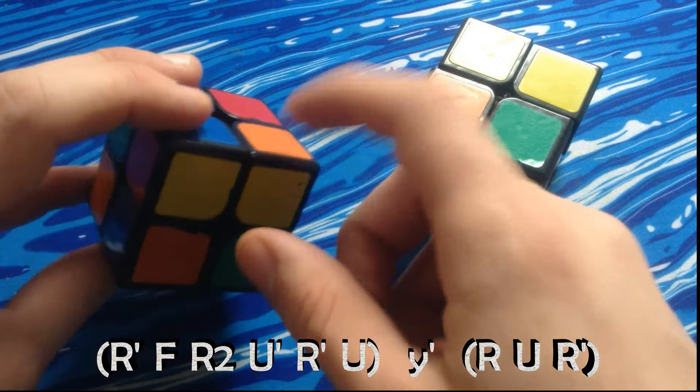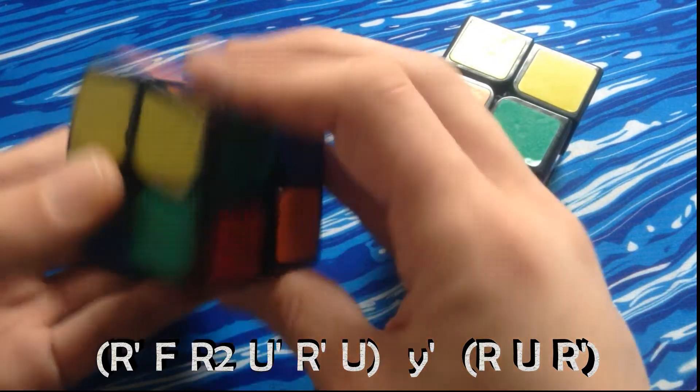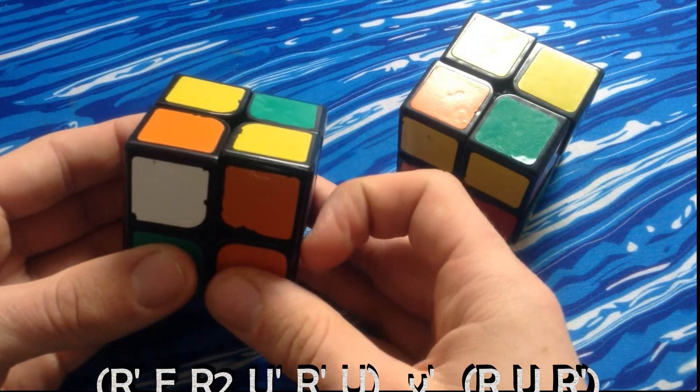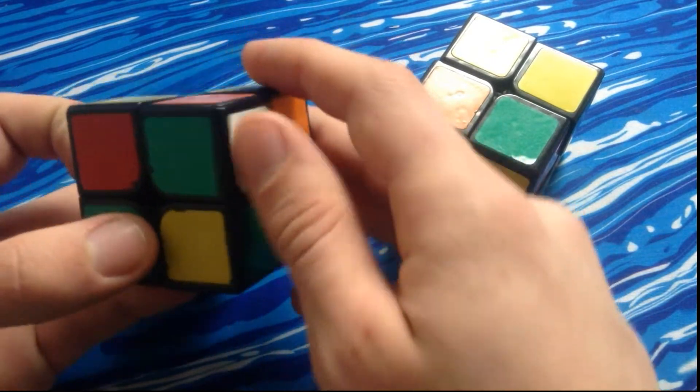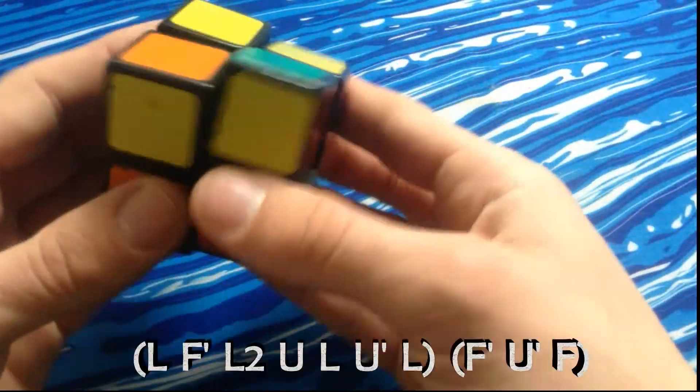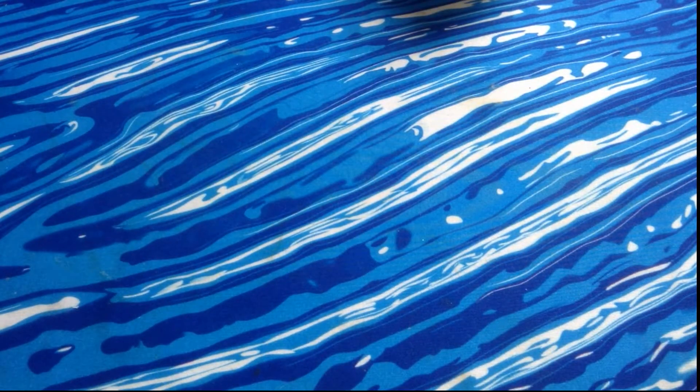The way you know which one to use is, you can see that these two pieces are the same, so you perform that trigger which starts with the R'. Just rotate and you solve it. Or you could just go F' U F if you wanted. It's not quite as nice but it's easy to learn.